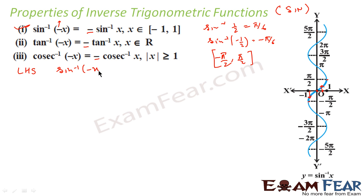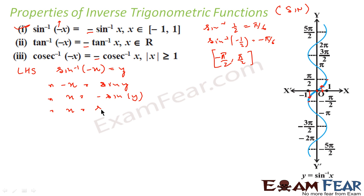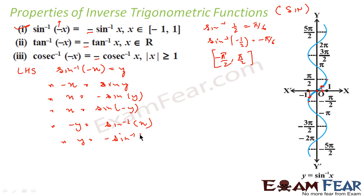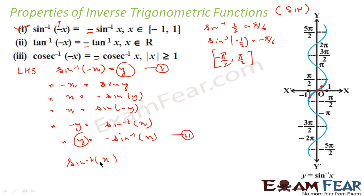From sin⁻¹(−x) = y, we get −x = sin(y), so x = −sin(y). Since −sin(y) = sin(−y), we have x = sin(−y), which gives −y = sin⁻¹(x), or y = −sin⁻¹(x). Since both equations equal y, we merge them to conclude: sin⁻¹(−x) = −sin⁻¹(x).